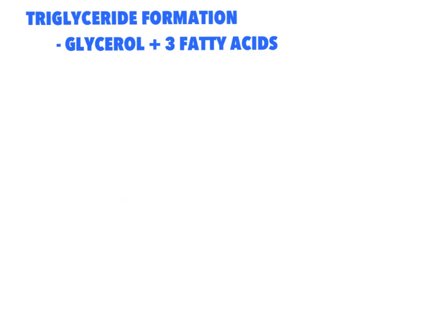Just like we did for carbohydrates, we're going to look at the basic lipid, which is a triglyceride. A triglyceride is formed from glycerol and three fatty acids. Here is a glycerol molecule, and we're going to add three fatty acids to it. These three fatty acids could be three of the same or three different. Here we've brought in two stearic acid molecules — they're saturated, as you can tell because they have all carbon-carbon single bonds and are carrying the maximum number of hydrogens. The fatty acid gets its name from the number of carbons it has and the number of double or single bonds.